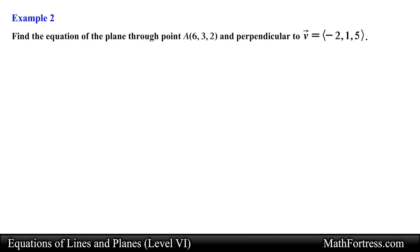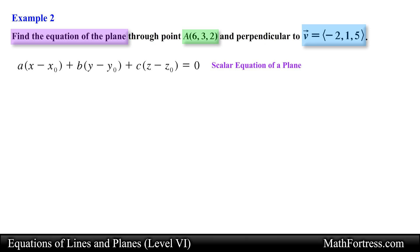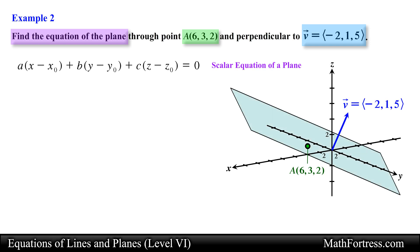Alright, let's go over the next example. Find the equation of the plane through point A and perpendicular to vector V. In this problem we are given the coordinates of a point and the components of a vector. We are asked to find the equation of a plane that passes through this point and is perpendicular to the vector. We can determine the equation of the plane by using the scalar equation of a plane, which requires a point on the plane and a vector perpendicular to the plane.